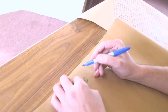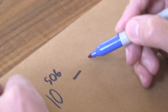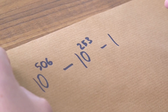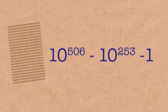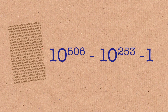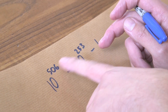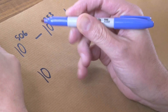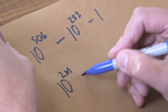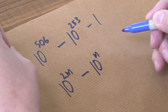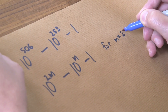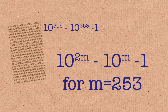So now we have a way to understand this number: 10 to the 506, take 10 to the 253, take 1. What's interesting is that if you double 253, you get 506. So I can let m equal 253, and the number has the shape of 10m squared, take 10m, take 1 — which has the shape of x squared, take x, take 1. Something you could actually get taught at school.